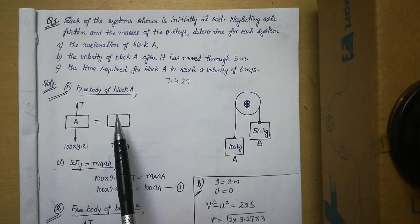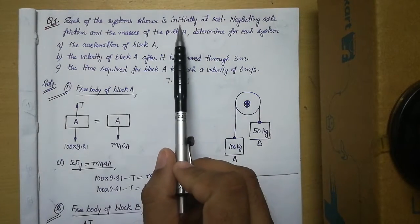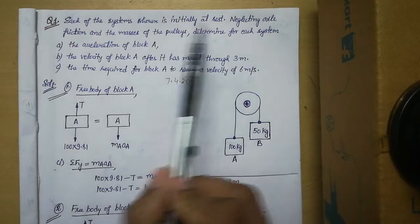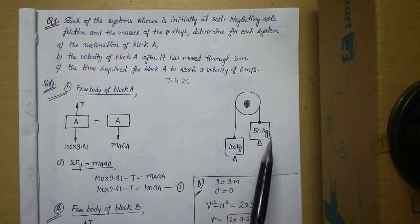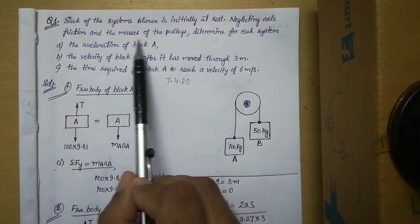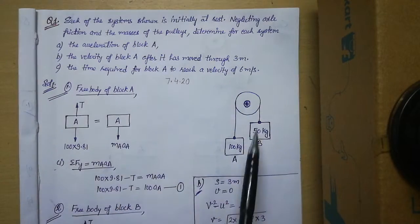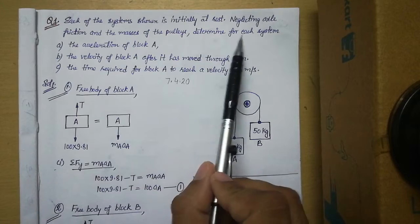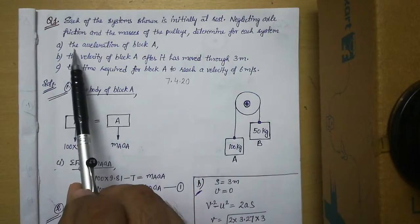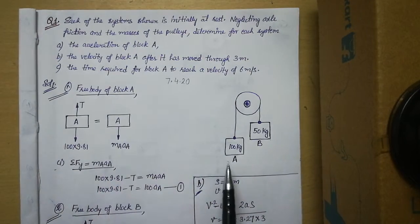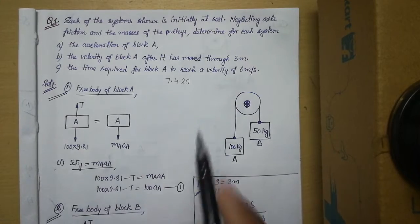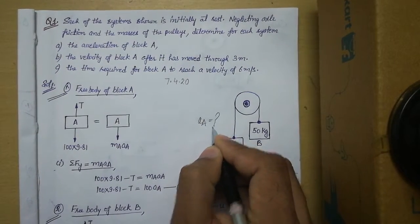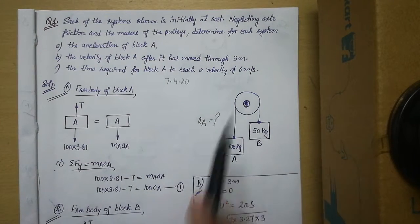What is given in the problem: initially the system is at rest, there is no friction anywhere, and we neglect the masses of the pulley. We have to first find the acceleration of block A, that is A_A. Let us observe this particular system.